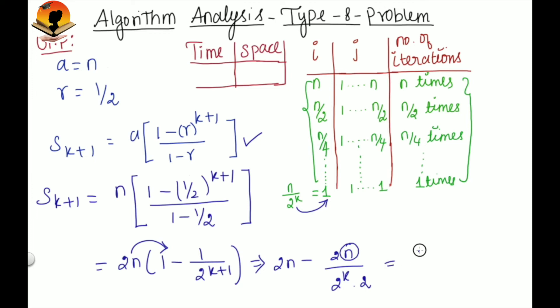So 2 power n minus 2 into 2 power k divided by 2 power k into 2. These terms will be cancelled. So you will get 2n minus 1.